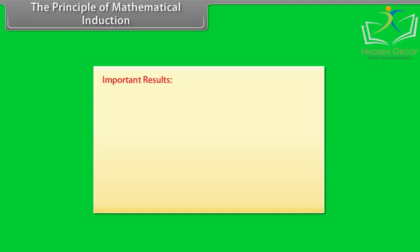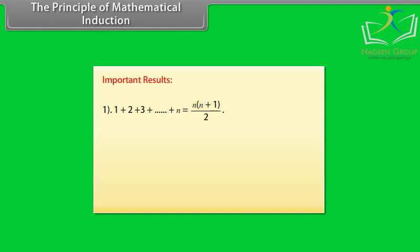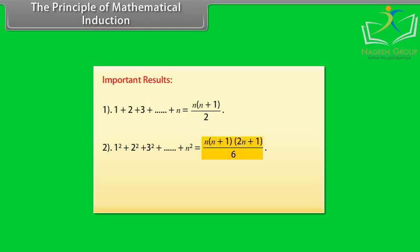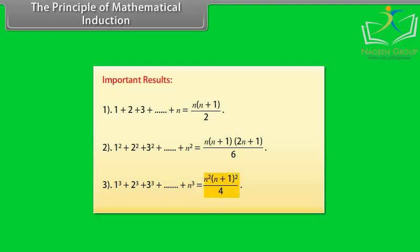Important results. 1 + 2 + 3 + ... + n = n(n+1)/2. 1² + 2² + 3² + ... + n² = n(n+1)(2n+1)/6. 1³ + 2³ + 3³ + ... + n³ = n²(n+1)²/4.